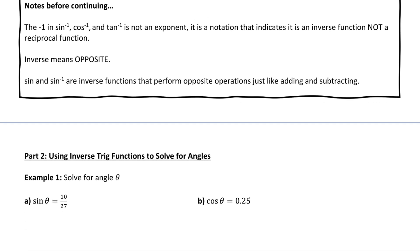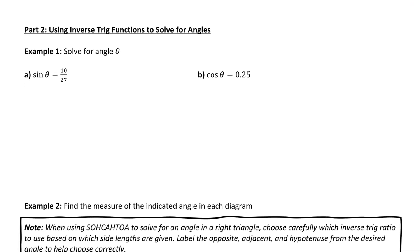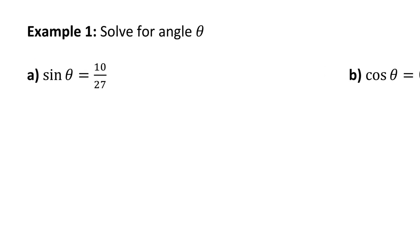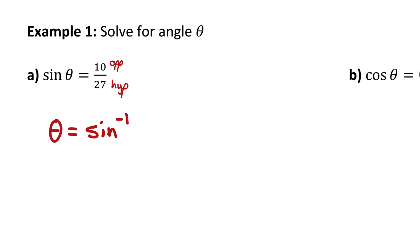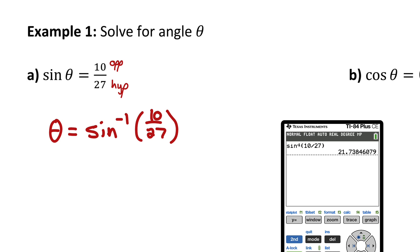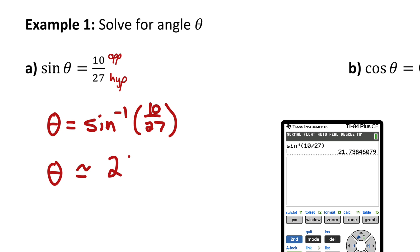Now let's do part two where we solve for missing angles. In example one, sine of theta equals 10 over 27. Because this is a sine function, I know the ratio is opposite over hypotenuse. I can find the reference angle that has that ratio using the inverse sine function. The angle equals inverse sine of 10 over 27. Using your calculator with the inverse sine function, you input the ratio and it outputs the angle — approximately 21.74 degrees.